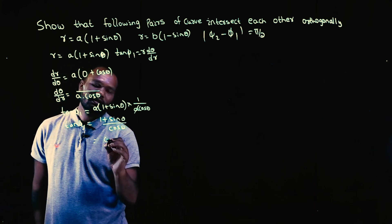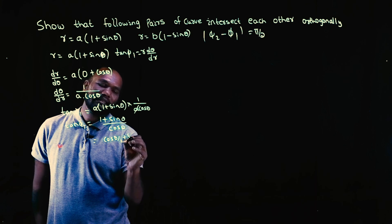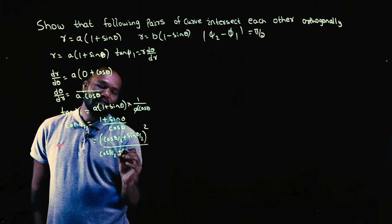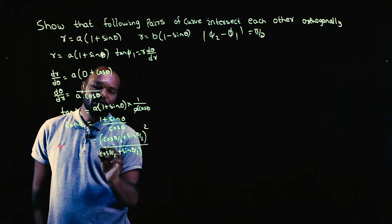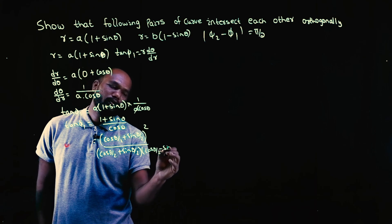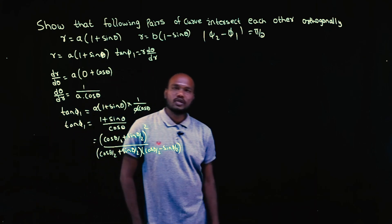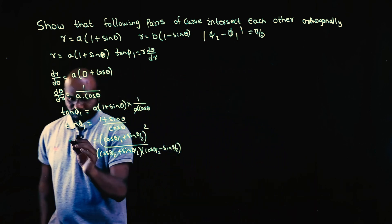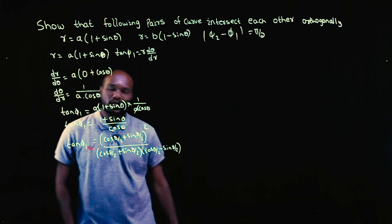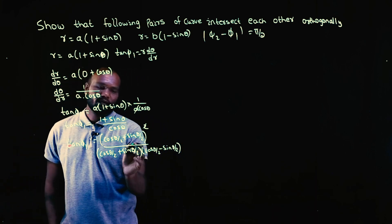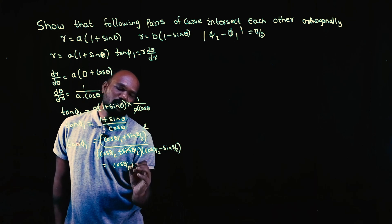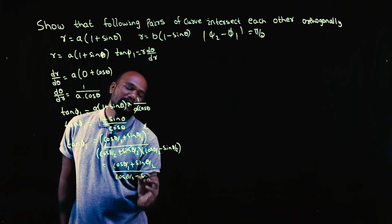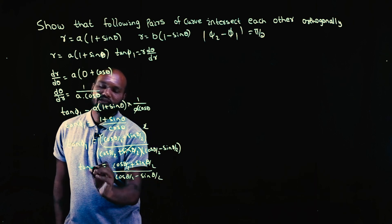Now, (1 + sinθ) can be written as (cos(θ/2) + sin(θ/2))², and cosθ is (cos(θ/2) + sin(θ/2))(cos(θ/2) − sin(θ/2)). If you do not know these formulas, you can refer to our previous question where we explained this clearly. Cancelling the common factor, tan φ₁ becomes (cos(θ/2) + sin(θ/2)) divided by (cos(θ/2) − sin(θ/2)).